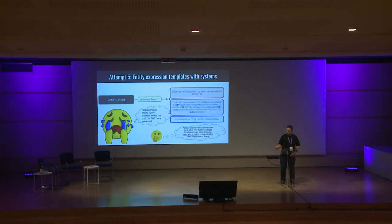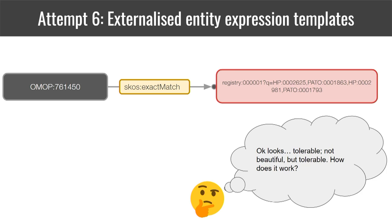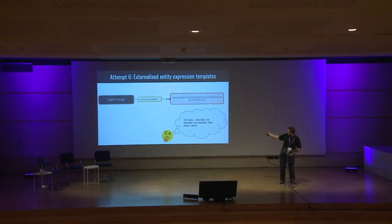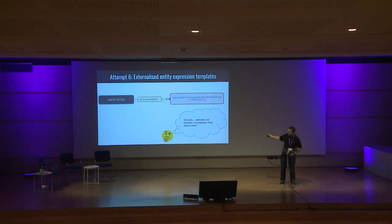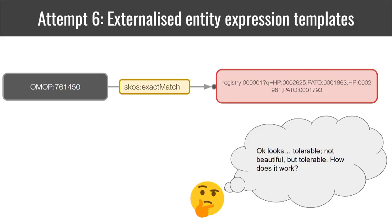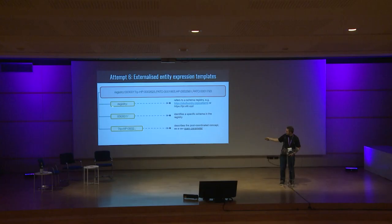Now let's move to the idea we're hoping to establish, which could deal with this problem better. We call it externalized entity expression templates. We go back to something that looks a little like earlier attempts — you have a piece up front that identifies something, and then you have all the components of this mapping listed afterwards.